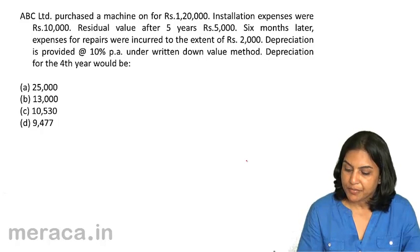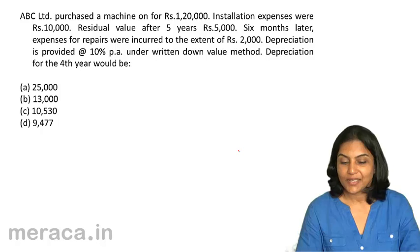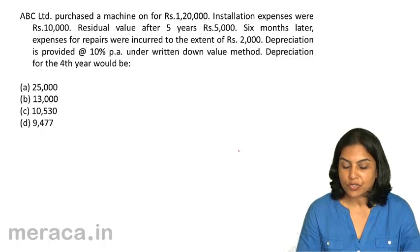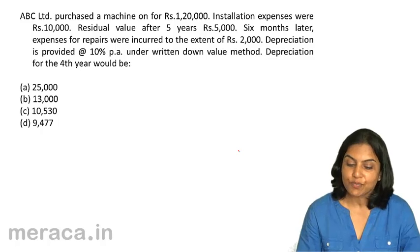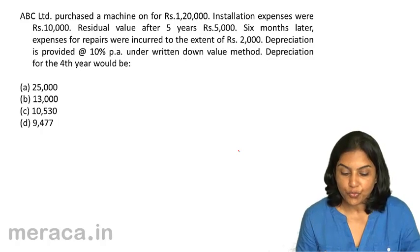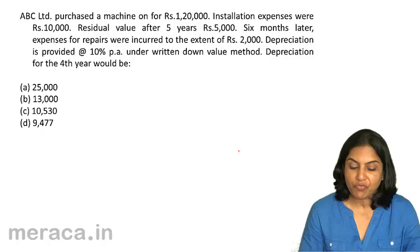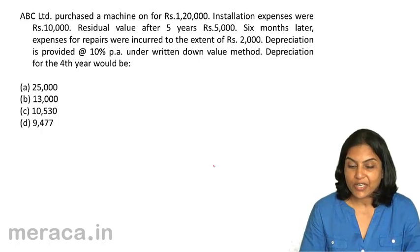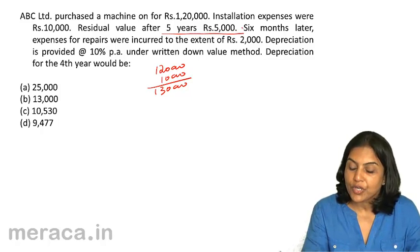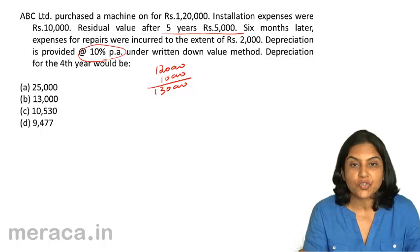ABC Limited purchased a machine for Rs. 1,20,000. Installation expenses were Rs. 10,000. Residual value after 5 years is Rs. 5,000. Six months later, expenses for repairs were incurred to the extent of Rs. 2,000. Depreciation is provided at 10% on the written down value method. Depreciation for the 4th year would be: A. 25,000, B. 13,000, C. 10,530, D. 9,477. The cost of the machinery is Rs. 1,20,000 + Rs. 10,000 = Rs. 1,30,000. Residual value is not relevant since the rate is already given.